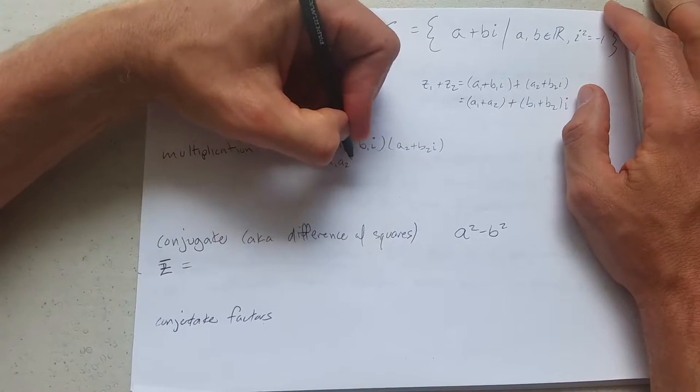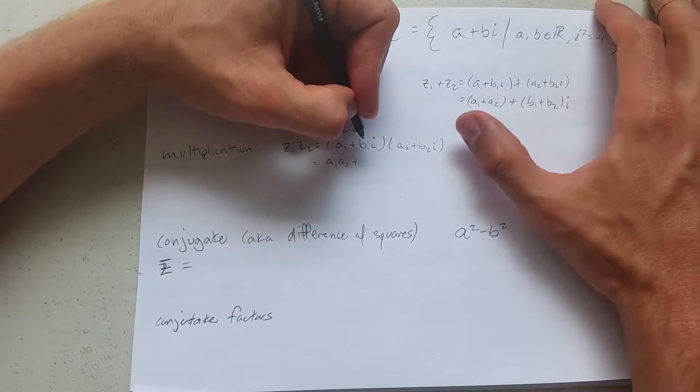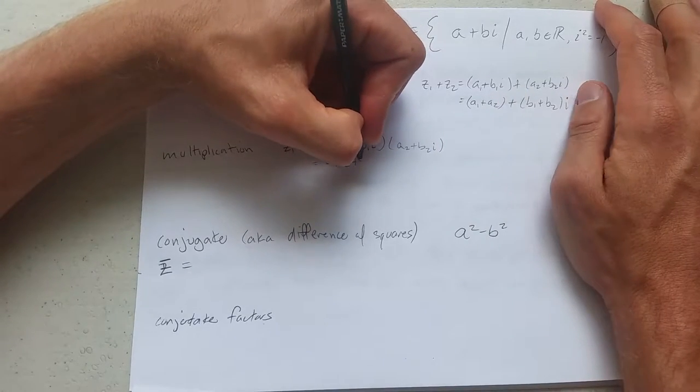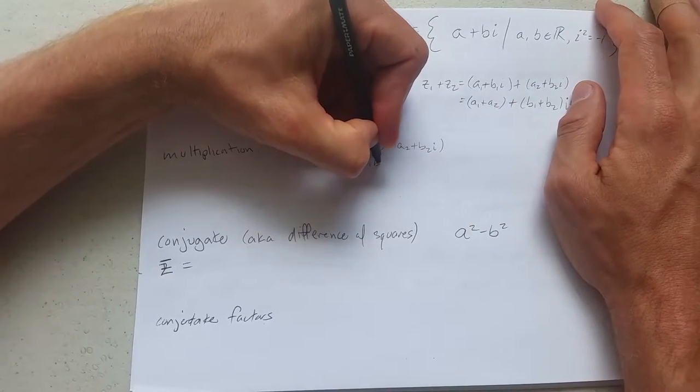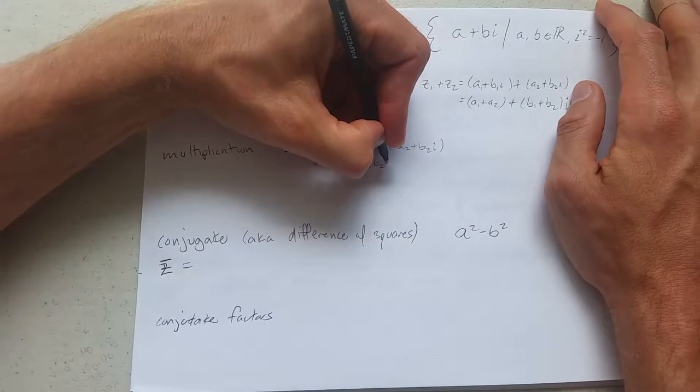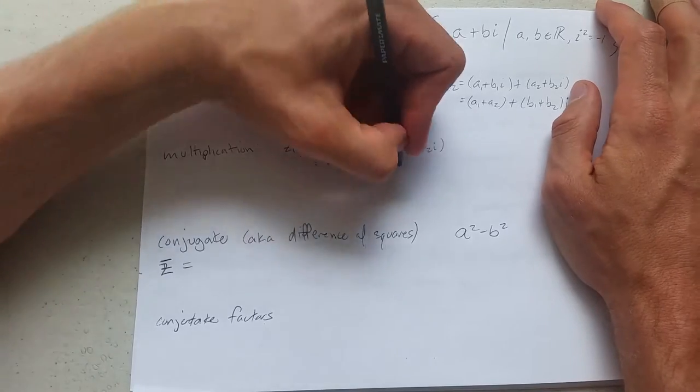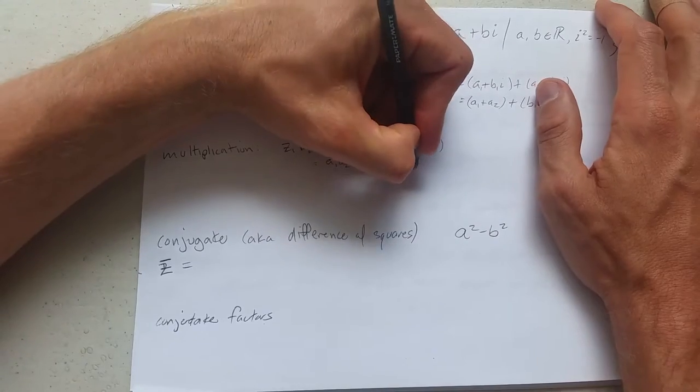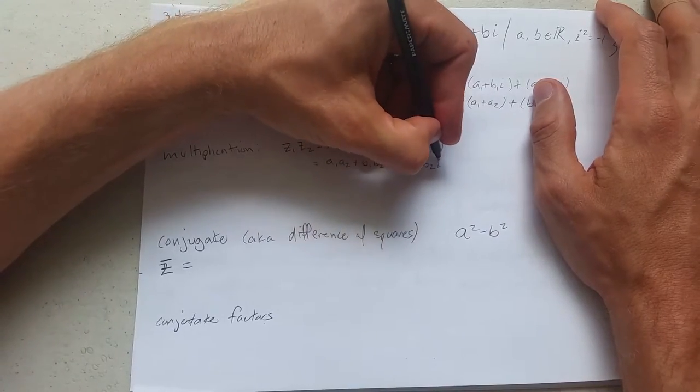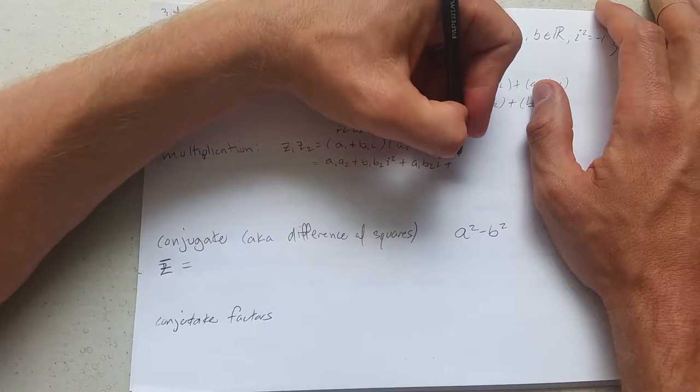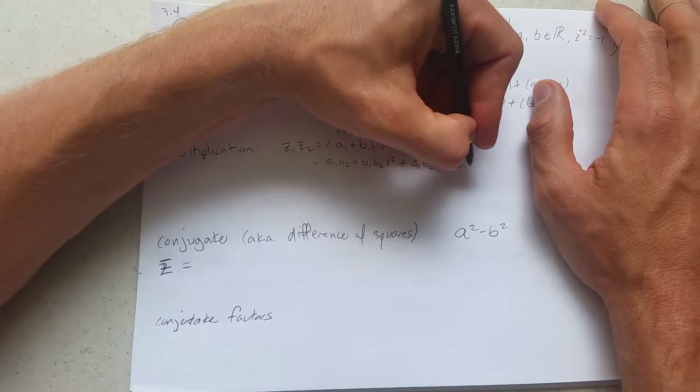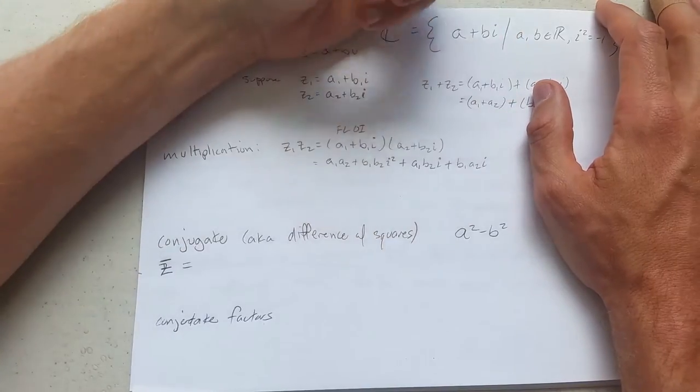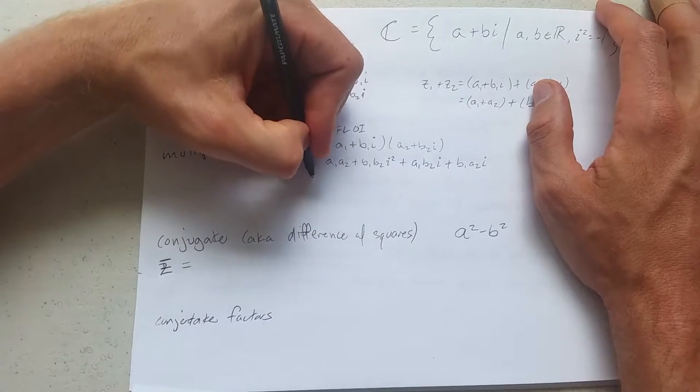You get a1 a2 plus last b1i b2i. I'm going to write it as b1 b2. Instead of writing i i, it's i squared plus a1 b2i plus b1 a2i. So this is the expanded form.